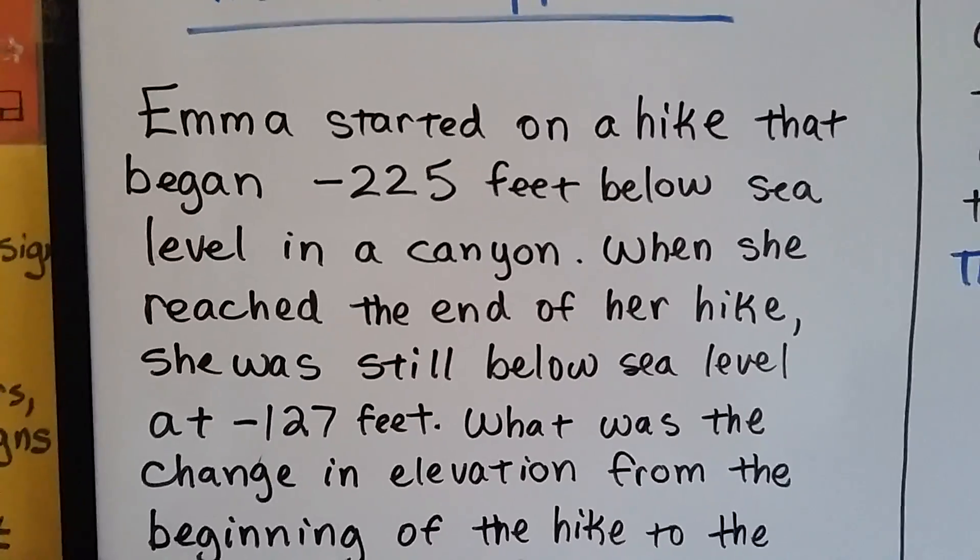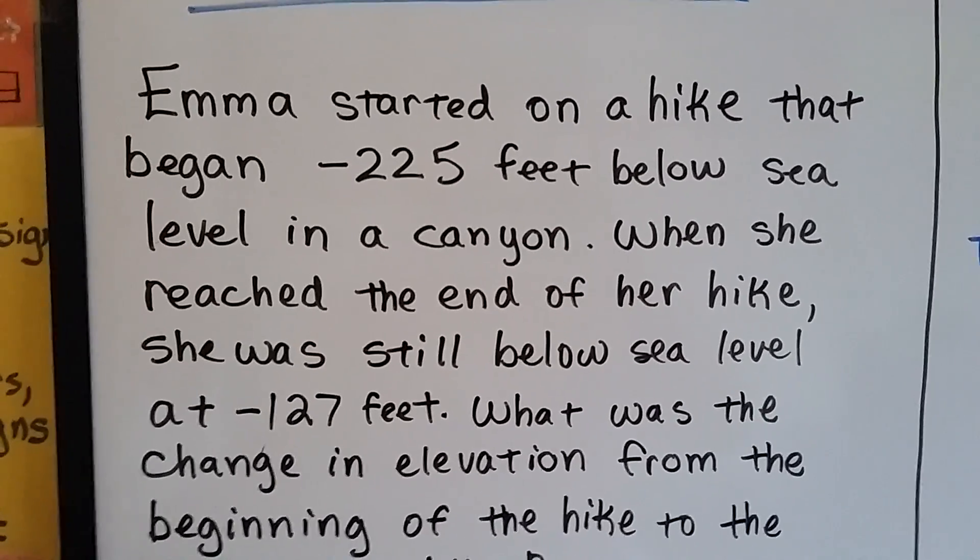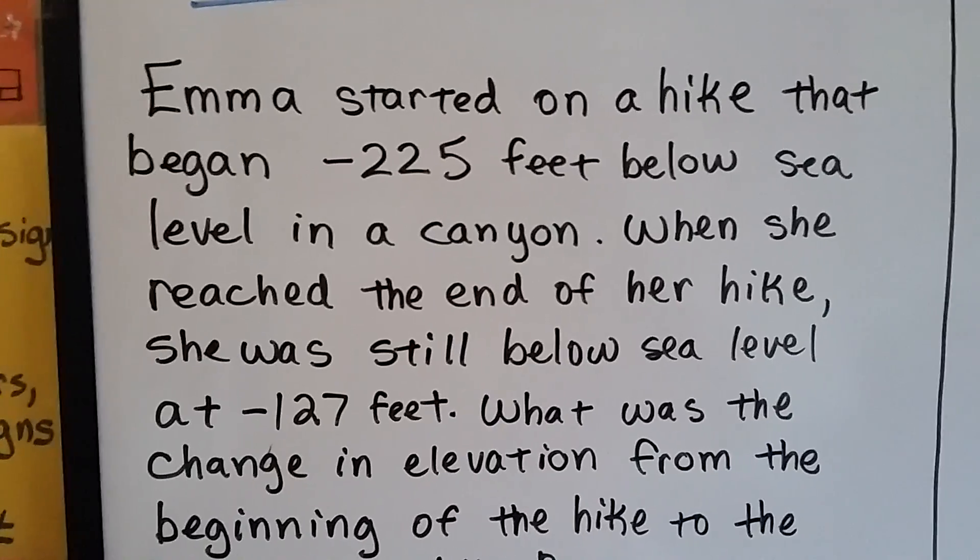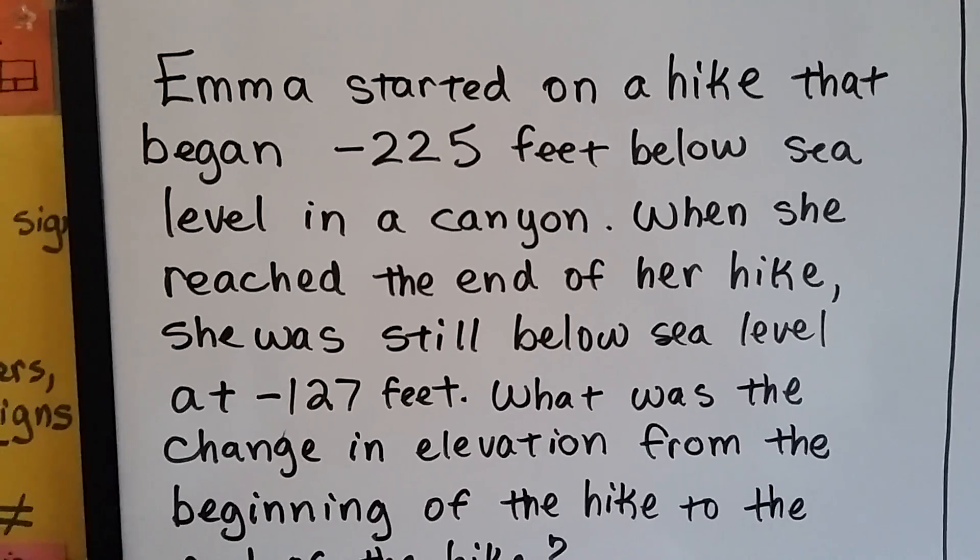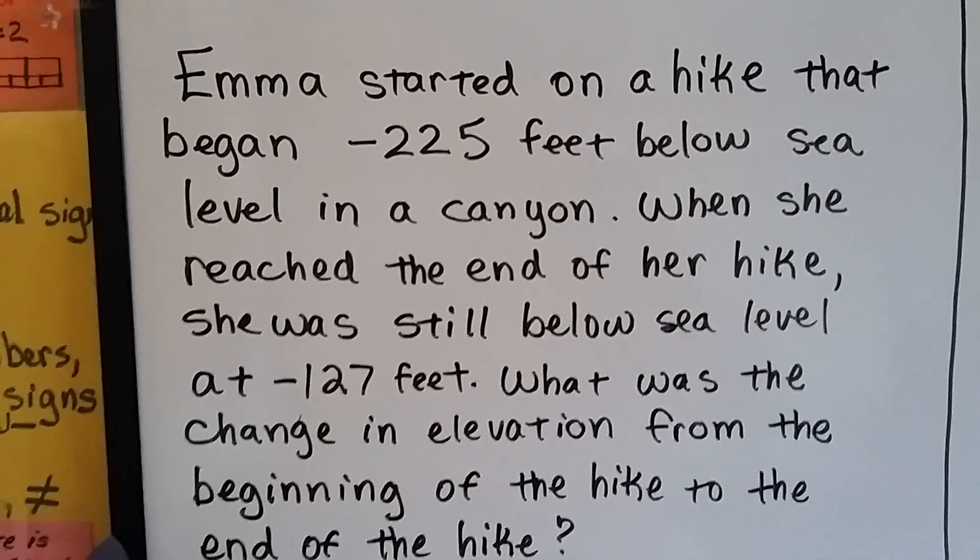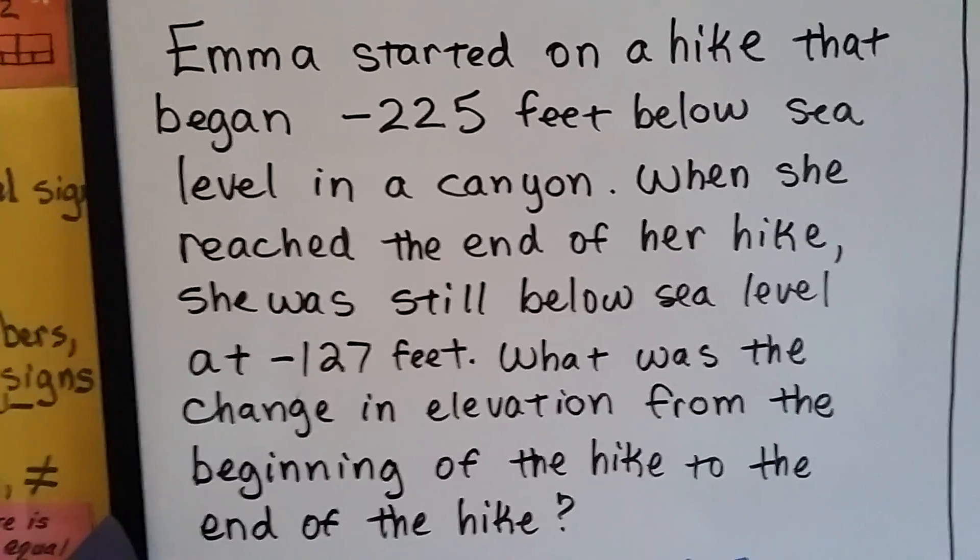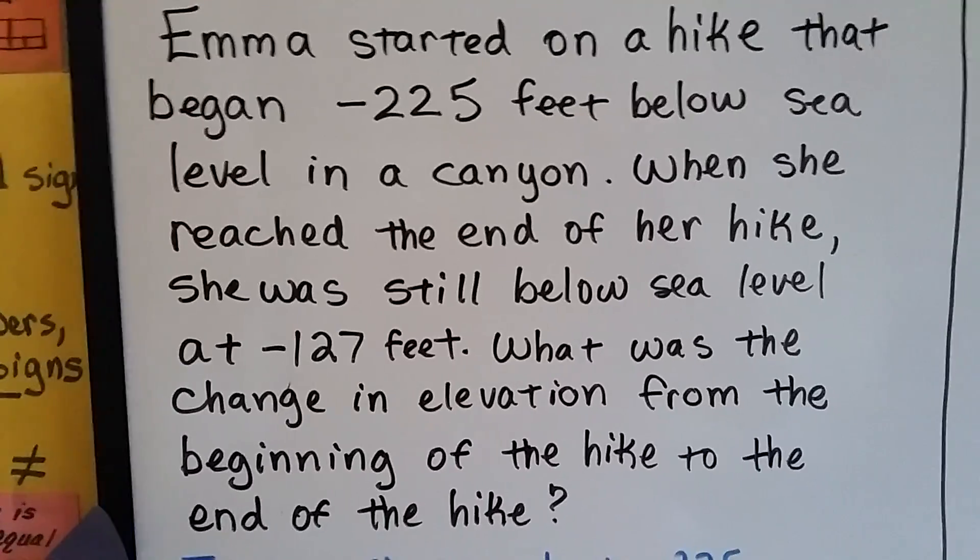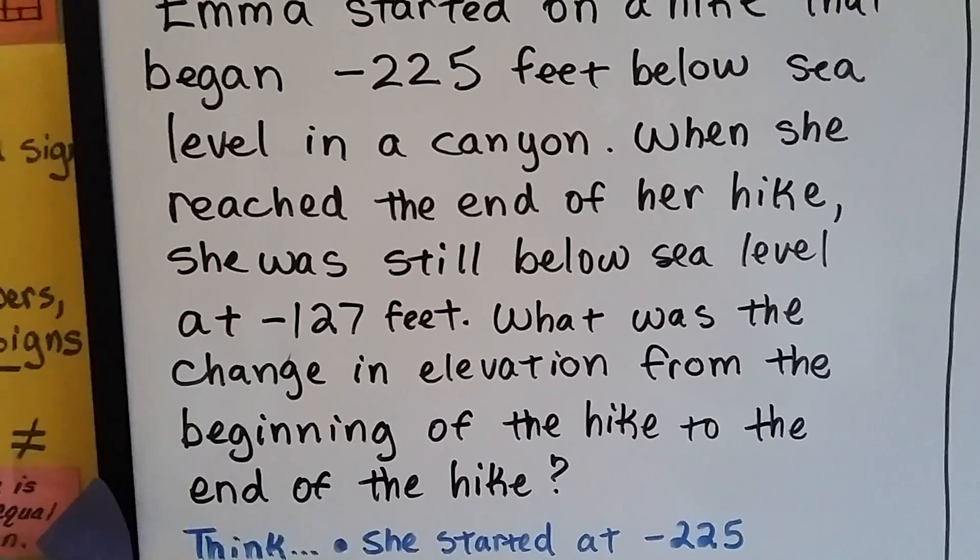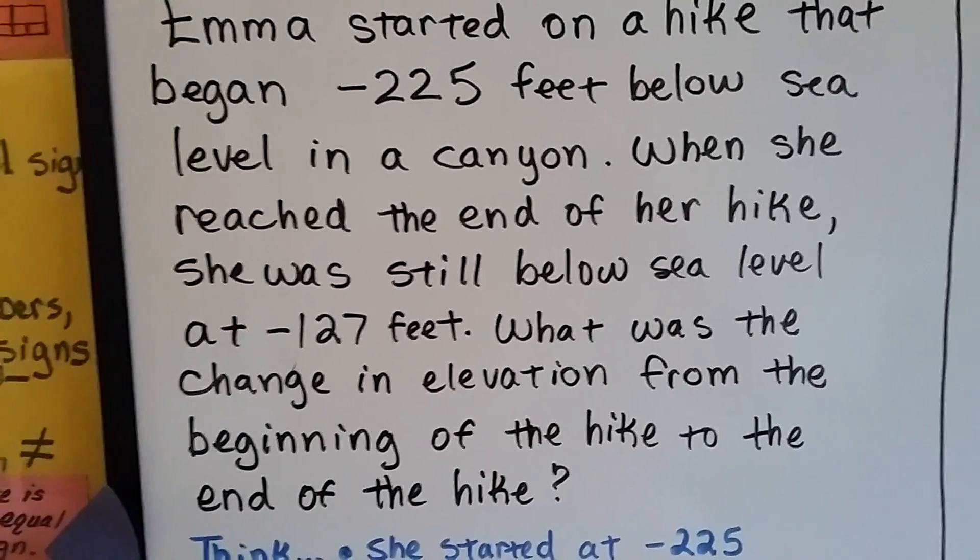So here we go. Here's our first word problem. Emma started on a hike that began negative 225 feet below sea level in a canyon. When she reached the end of her hike, she was still below sea level at negative 127 feet.